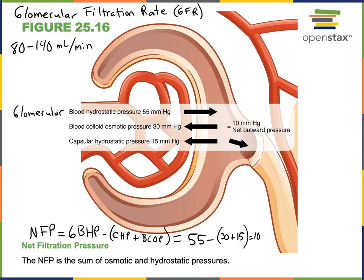In order to regulate the glomerular filtration rate, we can regulate net filtration pressure by regulating the glomerular blood hydrostatic pressure. The blood colloidal osmotic pressure and capsular hydrostatic pressure are not easily controlled, but we can easily control the glomerular blood hydrostatic pressure. The primary way to do that involves regulating blood flow in and out of the glomerulus through the afferent and efferent arterioles.